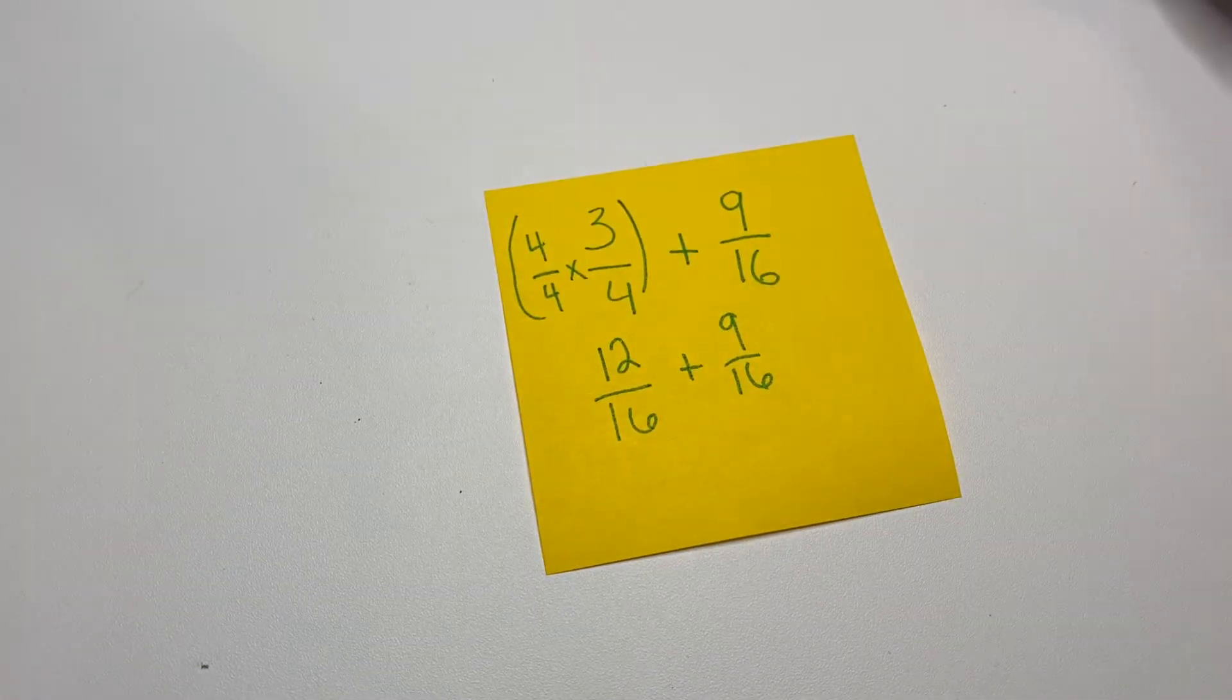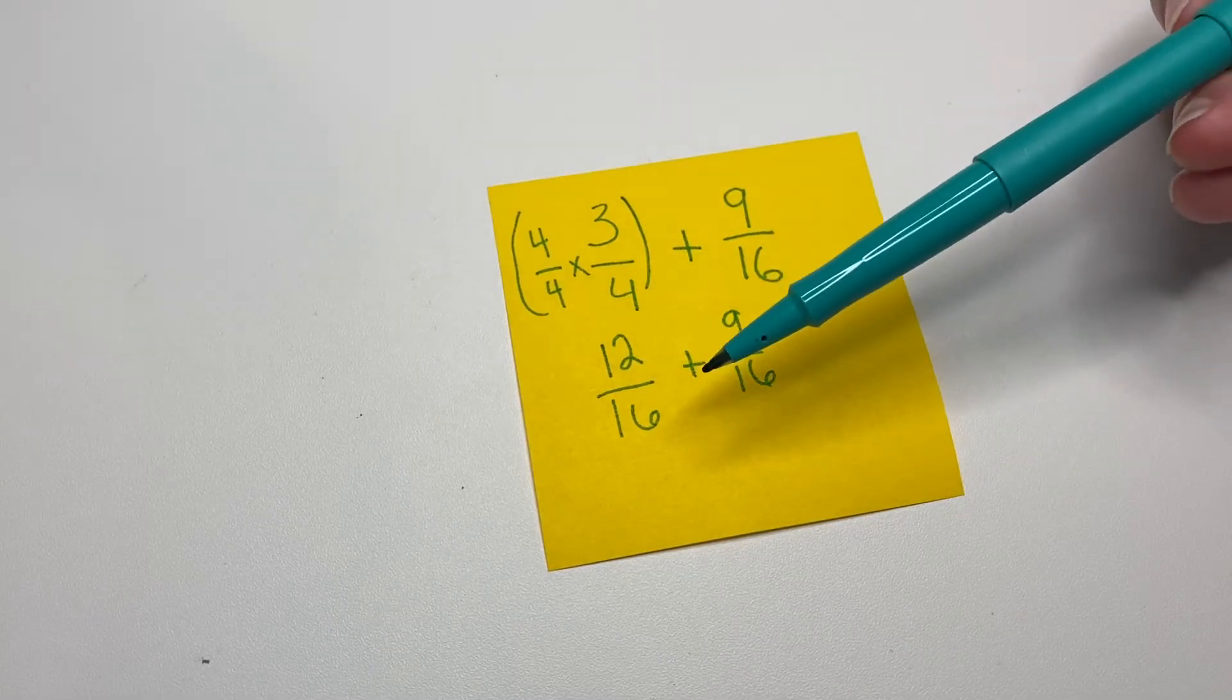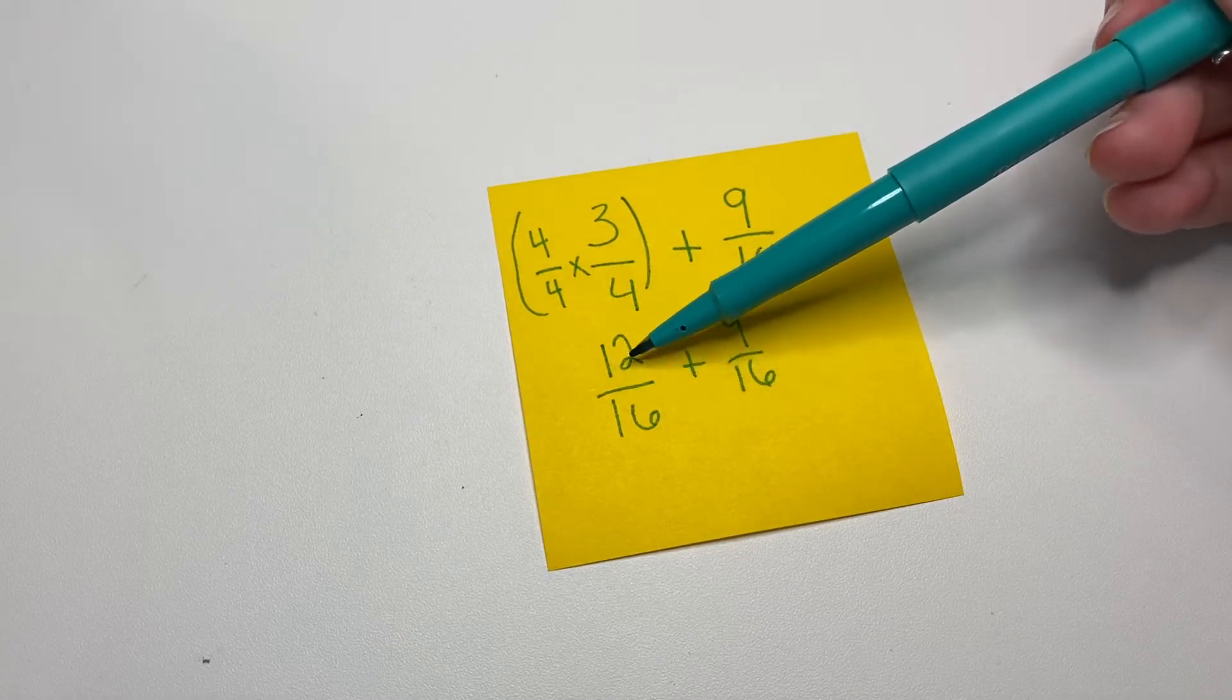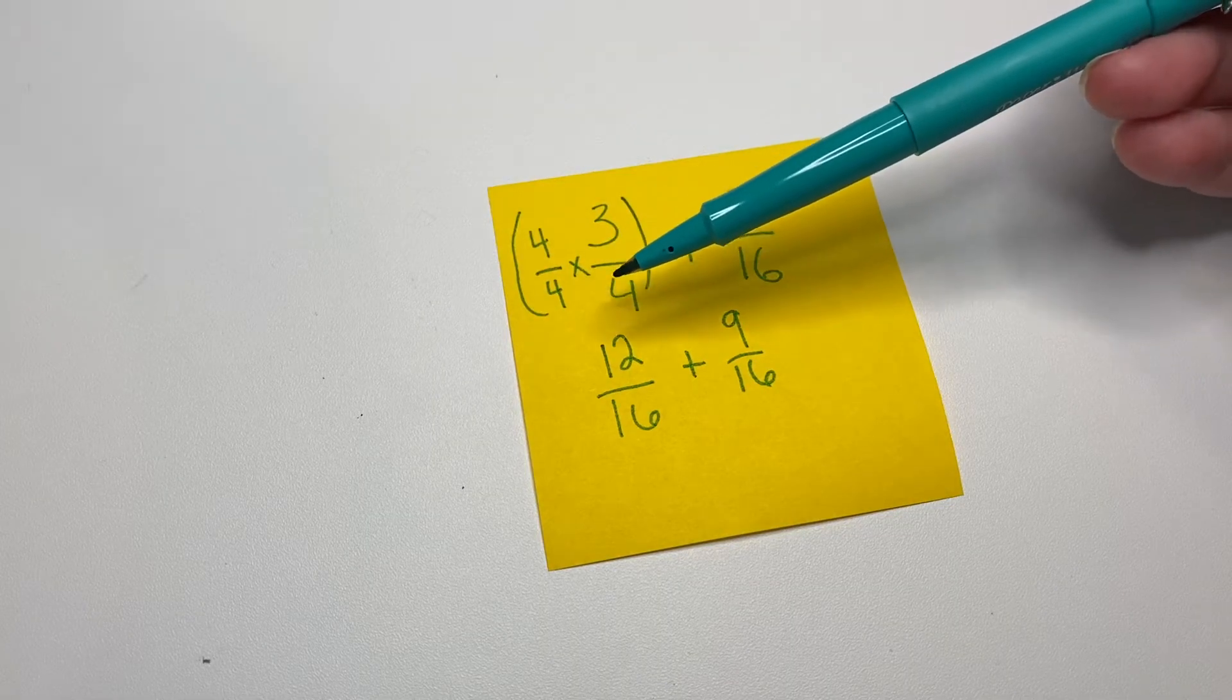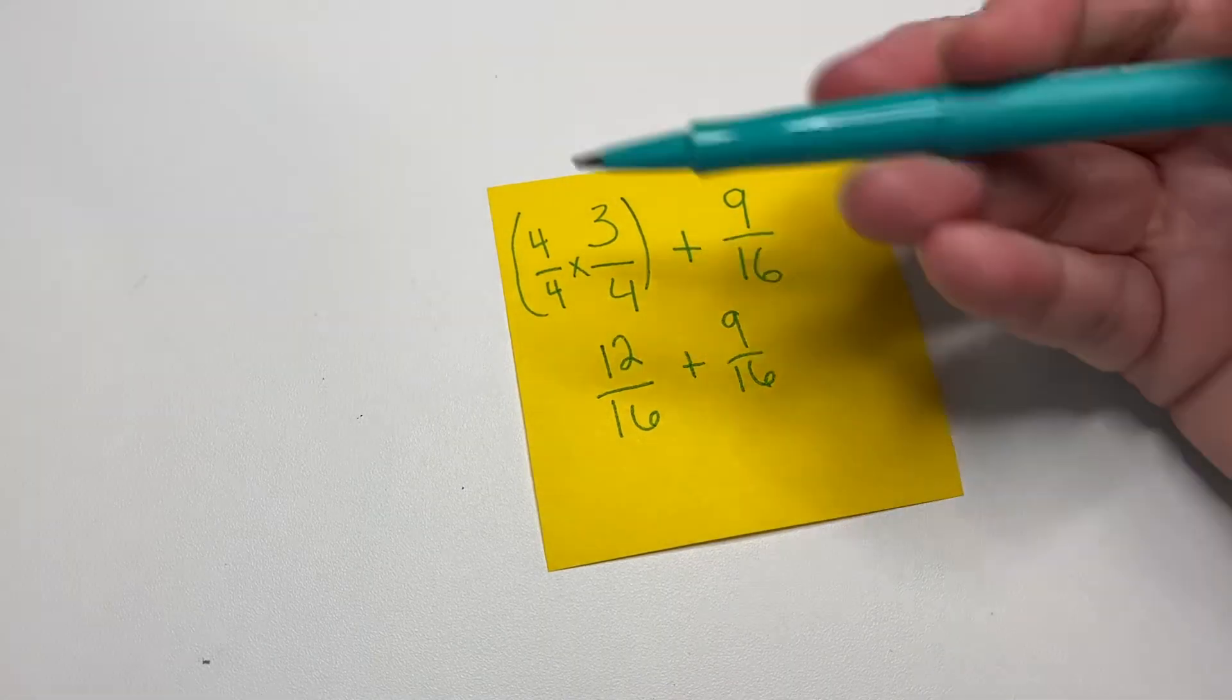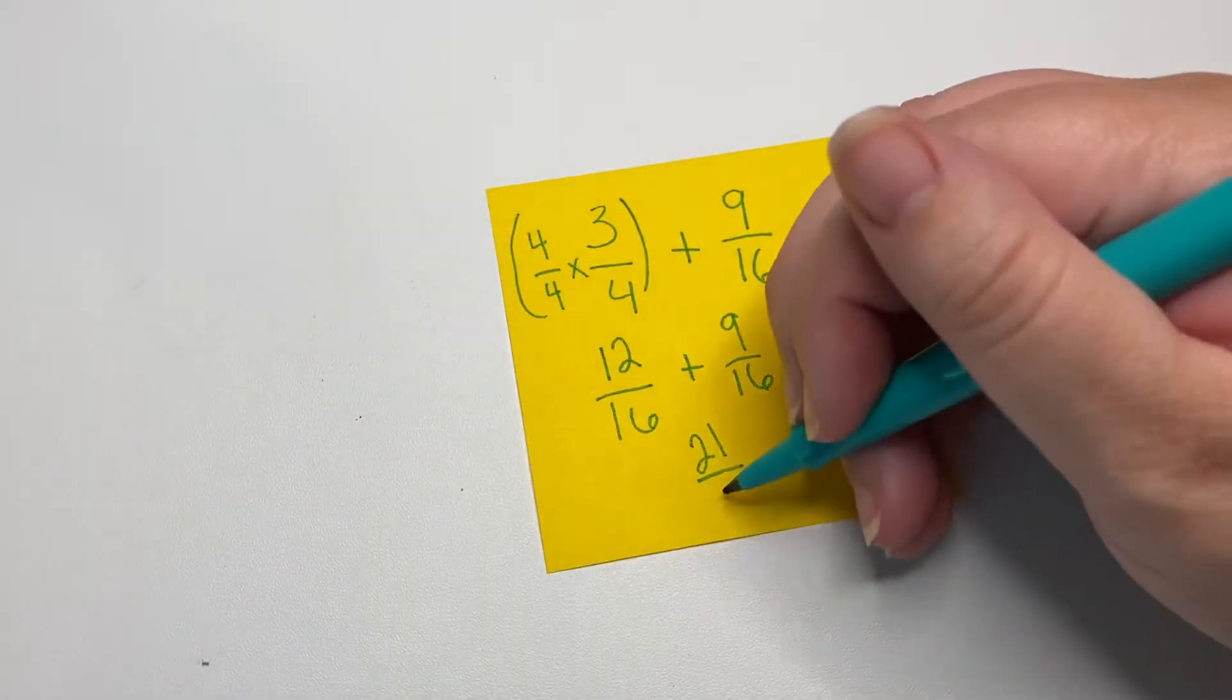And then over here we didn't need to change anything. And now we can just, because they are the same denominators, we can just add the numerators. So we're going to add 12 plus 9 which is 21. And we're going to keep the 16, keep the denominator.